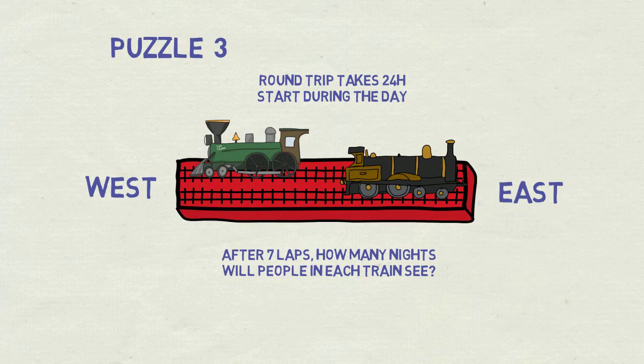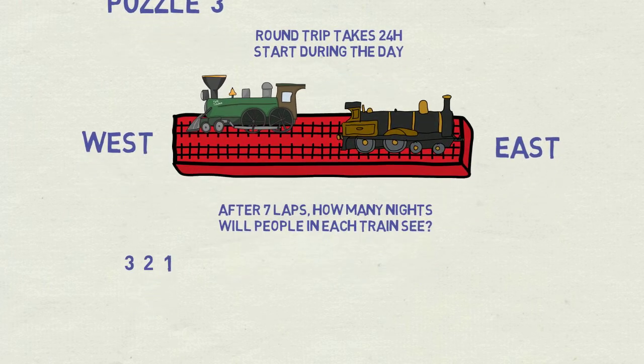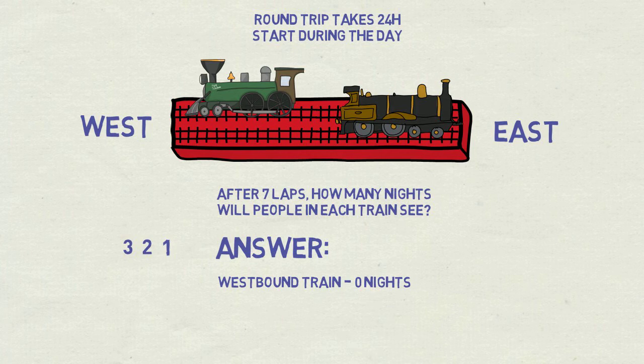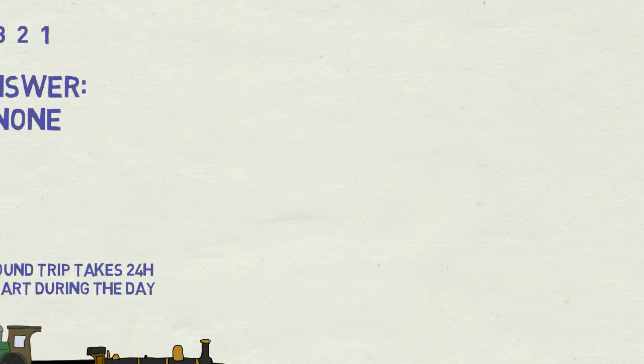And ready? Three, two, one. The answer is, for westbound train it will be 0 nights. For eastbound it will be 14. And now let's see why.